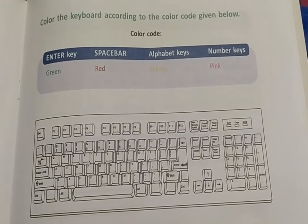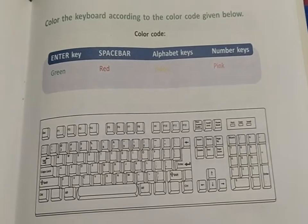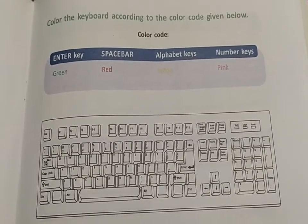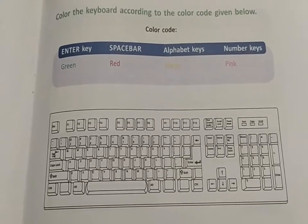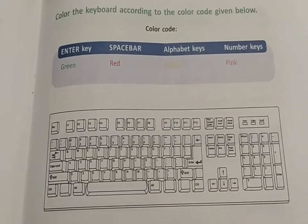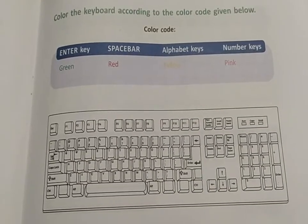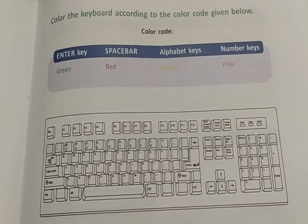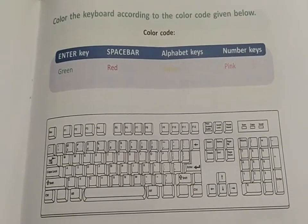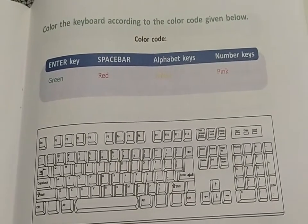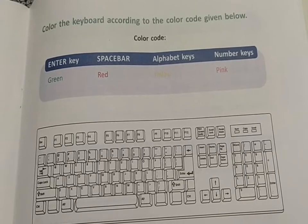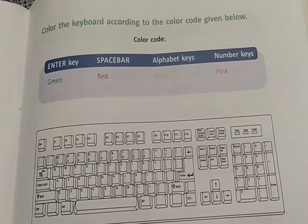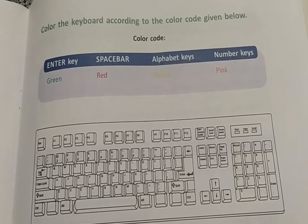In a computer, we already completed the previous lesson. Now, 'Know Your Keyboard' — it is an activity on page number 35. Go to page number 35. Open your textbook and read the instruction given in green color: color the keyboard according to the color code given below.